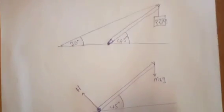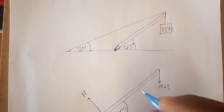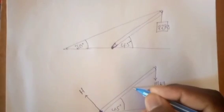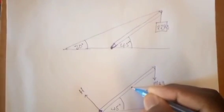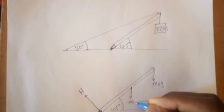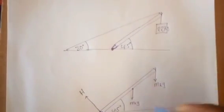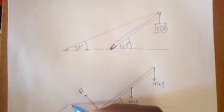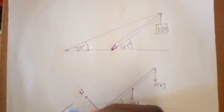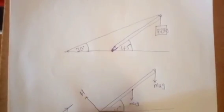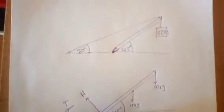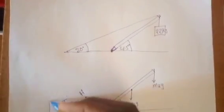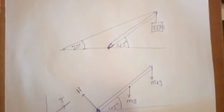We also have a force produced by the hanging object, which I'll name m2g. The strut has a mass of 45 kg, so I'll place its weight in the middle and call it m1g. We also have a force produced by the tension in the cable, which I'll name T, and I can resolve it into its components.